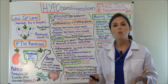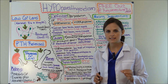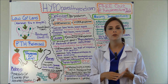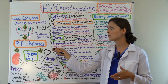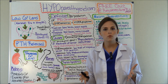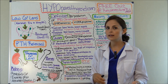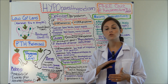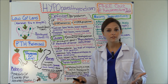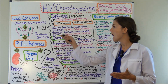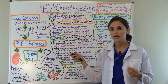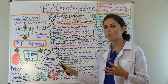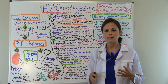First, what is hypoparathyroidism? In a nutshell, it is low production of PTH — parathyroid hormone — by the parathyroid glands. Your parathyroid is responsible for regulating your calcium levels along with your phosphate levels. If you have low secretion of parathyroid hormone, you're going to get hypocalcemia and hyperphosphatemia, and in a second you'll see why through this negative feedback loop.